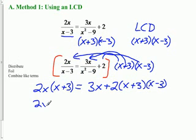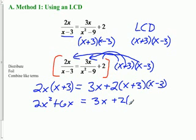So here we go. Over here, we're going to have 2x squared plus 6x. And on the other side, we're going to have 3x plus 2 times the quantity x squared minus 9.